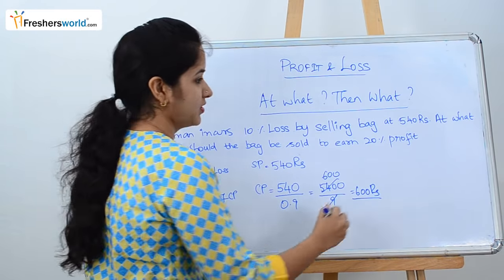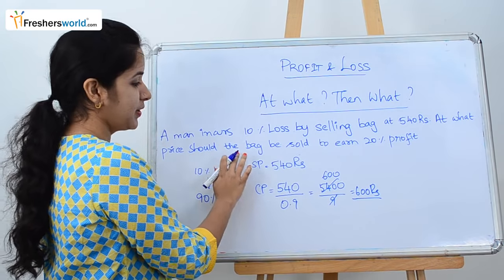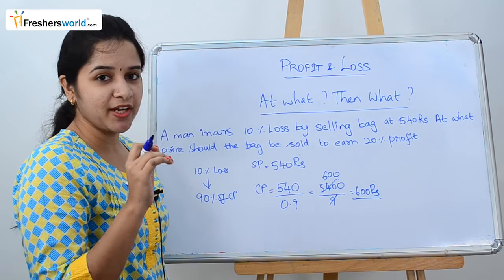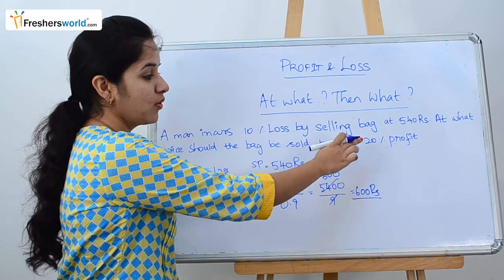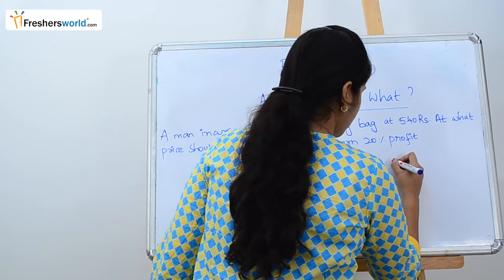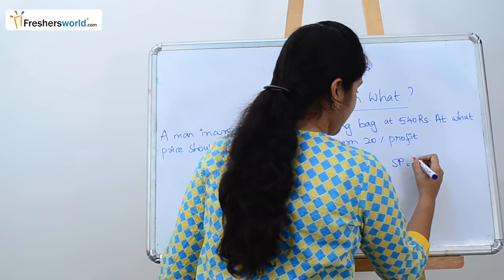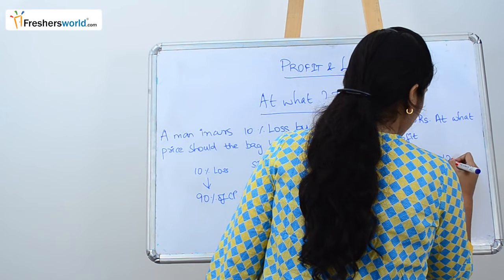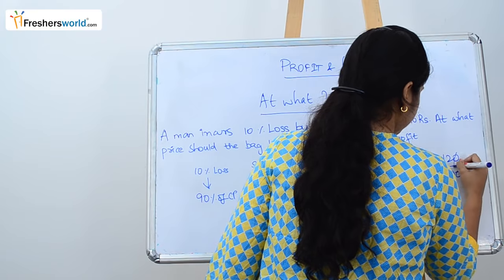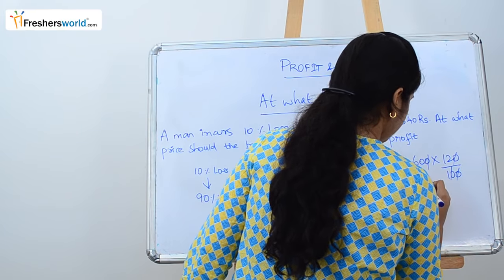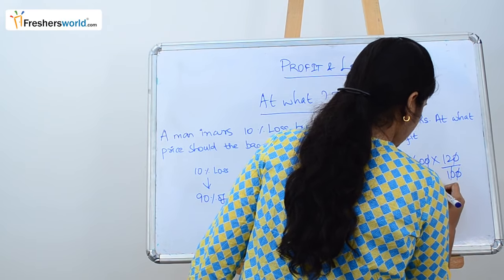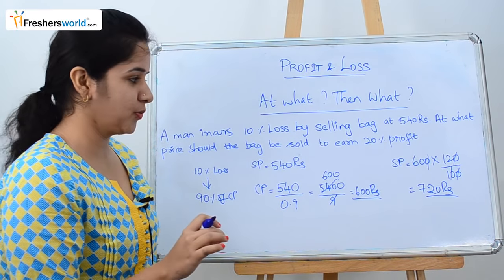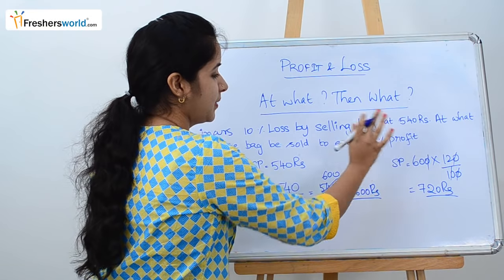Now for the second part: at what price should the bag be sold to earn 20 percent profit? The cost price is 600 rupees, and 20 percent profit means selling at 120 percent of cost price. So selling price equals 600 multiplied by 1.2, which is 720 rupees. If sold at 720 rupees, he earns a 20 percent profit.